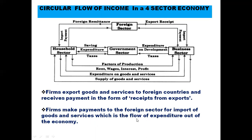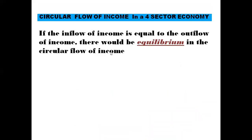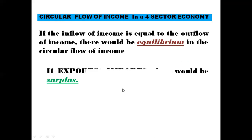Firms also make payments to the foreign sector for imported goods and services, which is a flow of expenditure out of the economy. When the business sector imports goods and services from foreign countries, it pays the foreign sector. So import payment flows from the business sector to the foreign sector. Sometimes firms receive export receipts - money coming in - but they also spend money on imports going out.